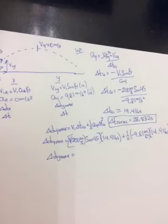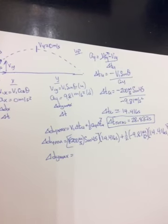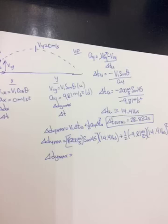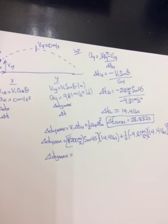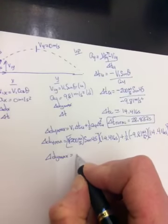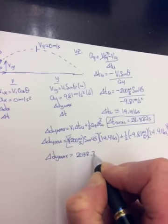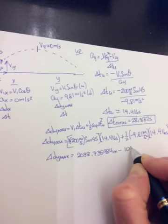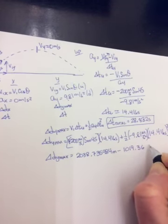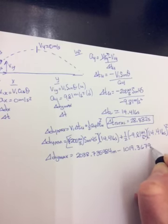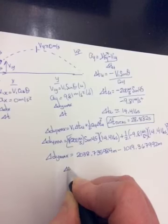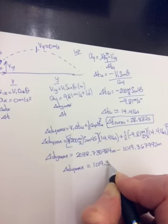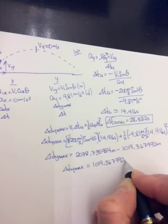That gets multiplied by 14.416 seconds plus one half negative 9.81 meters per second squared times 14.416 seconds squared. Now if you don't round at all, the first term will actually be double the second term. The first term is 2,038.735984 meters. And the second term would be 1,019.367992 meters. And you end up with delta d_y max of 1,019.367992 meters roughly.